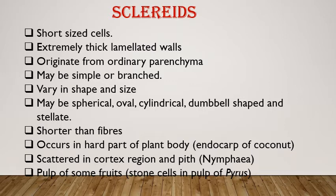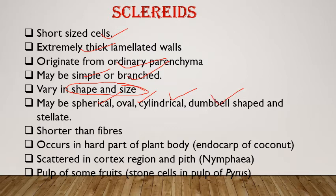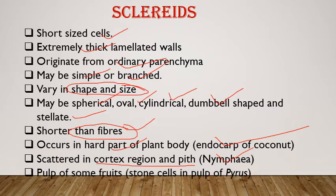Sclereids are short-sized cells with very thick lignified walls. They originate from parenchyma, may be simple or branched, and their shape varies — spherical, oval, cylindrical, dumbbell-shaped, or star-shaped. They are shorter than fibers and are present in the hard parts of the plant body — for example, in the endocarp of coconut, cortex, pith, leaf of Nymphaea, and in the pulp of fruits such as pyrus, where stone cells are present.